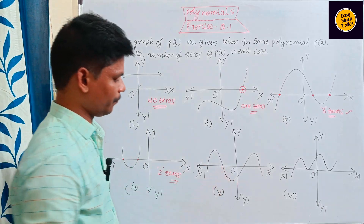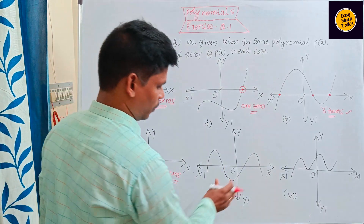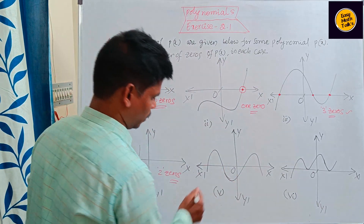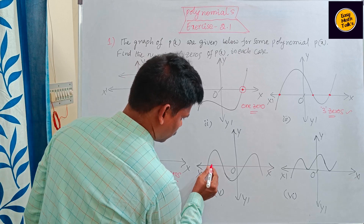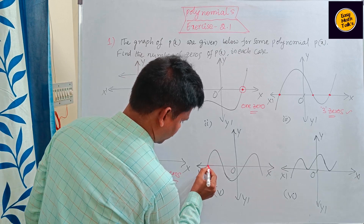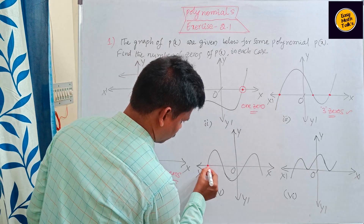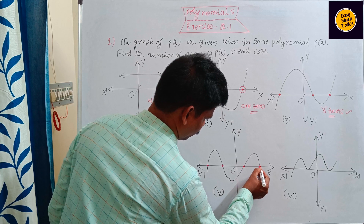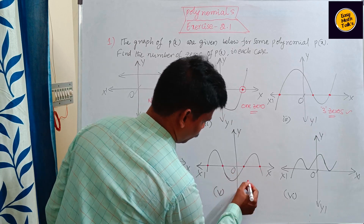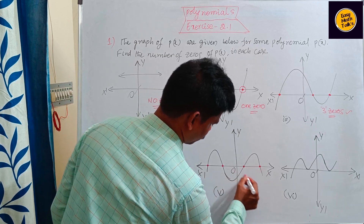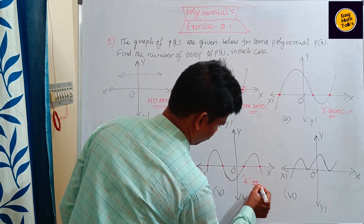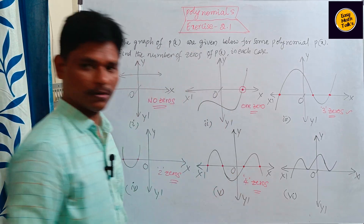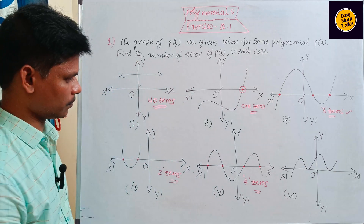See this figure. Here this polynomial touches the x-axis at one, two, three, four points. Four zeros. So here the number of zeros is four.